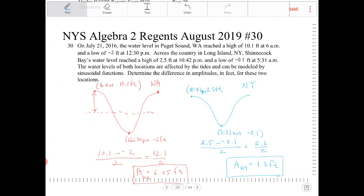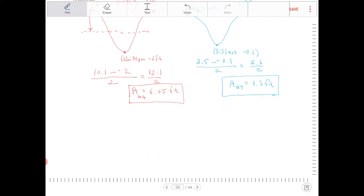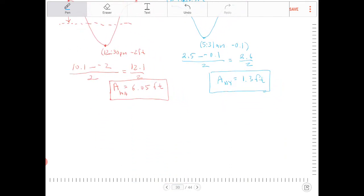And it says, determine the difference in amplitudes in feet for these two locations. So the difference, A_Washington minus A_New York, is equal to...